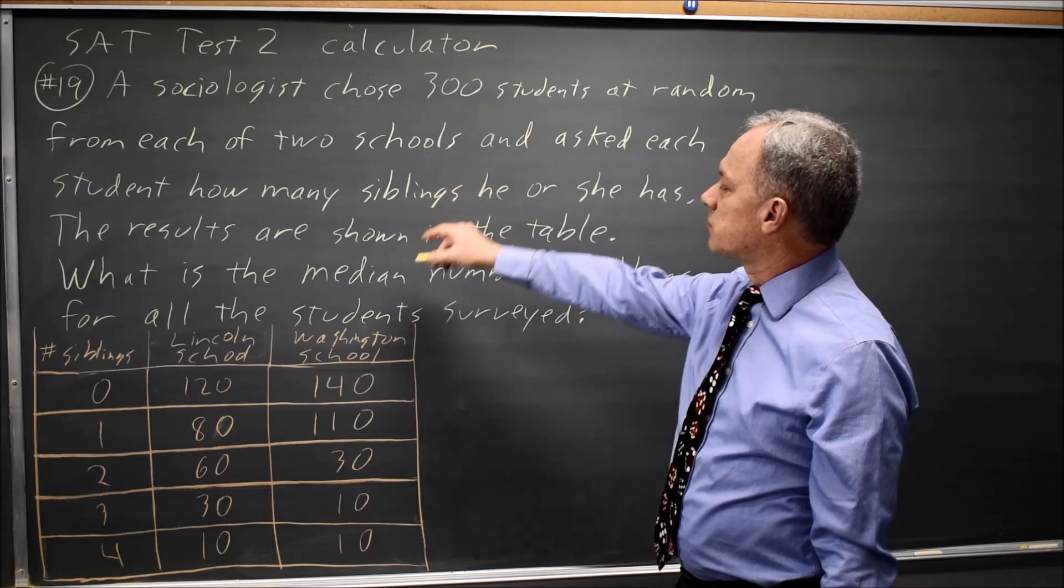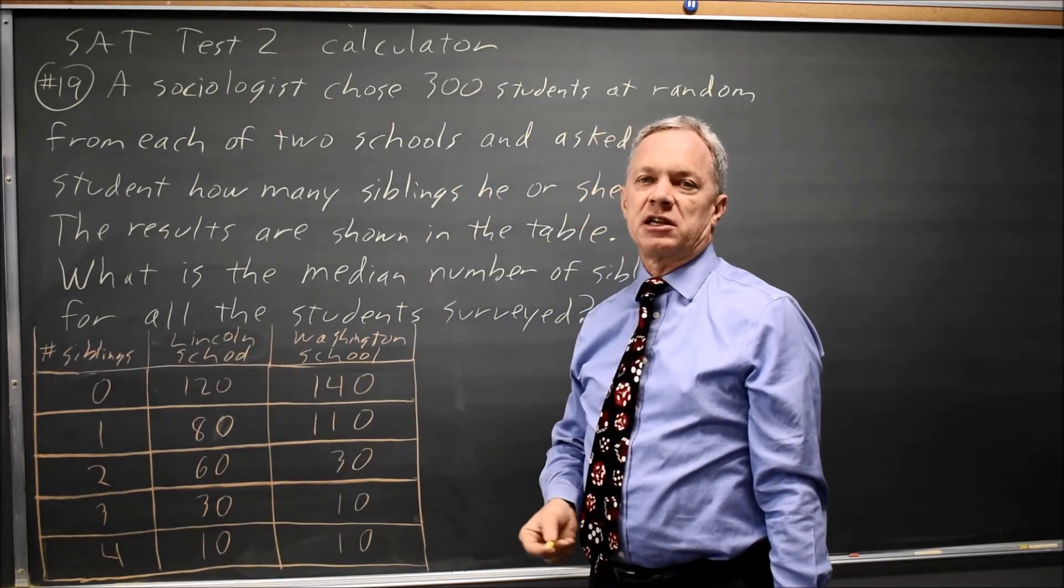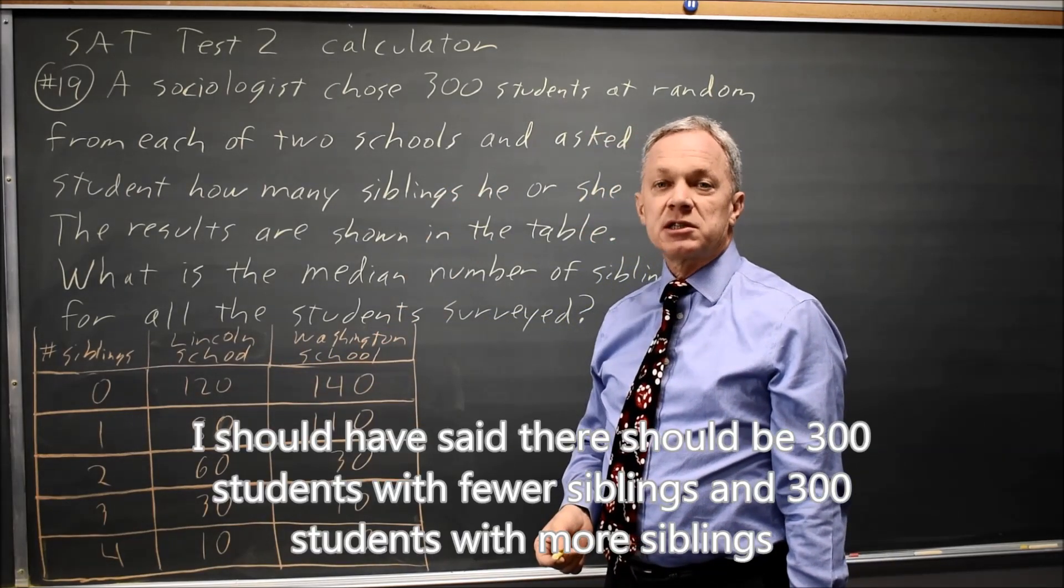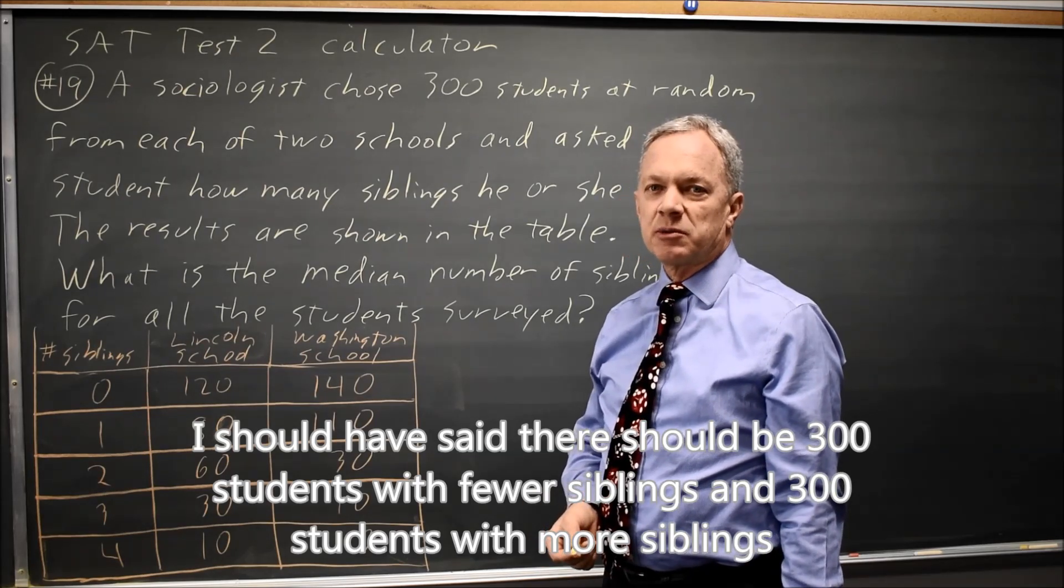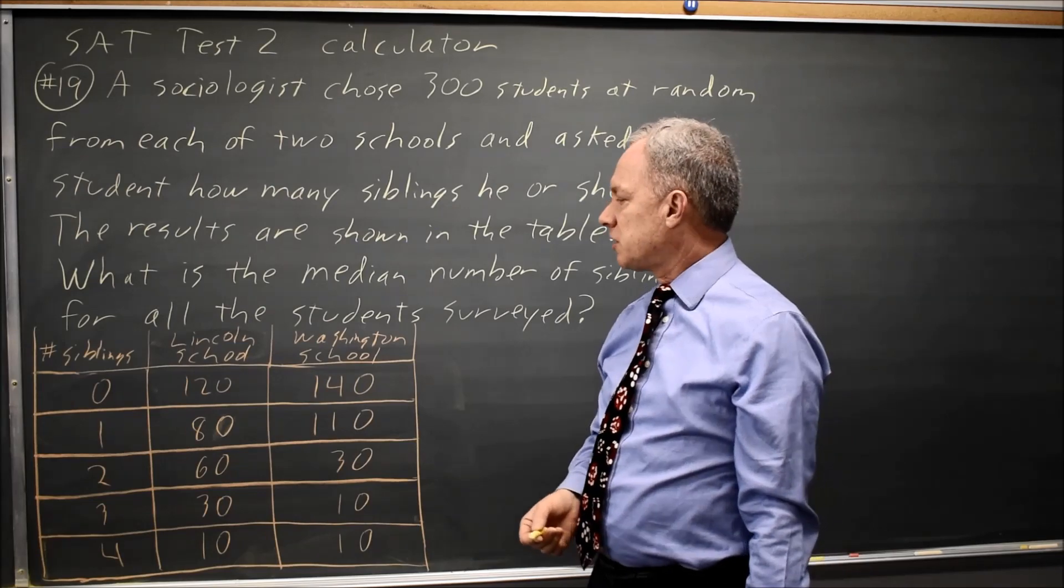Since there are 300 students from each of two schools, that's a total of 600. So there should be 300 students with fewer siblings and 300 students with more siblings if you write all the numbers in order.